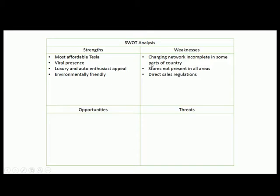The weaknesses added to the chart are: an incomplete charging network in certain parts of the country, and stores not being present in all areas. One reason for that is direct sale regulations in many states which prohibit a car manufacturer from selling directly to consumers without a dealership. You can see what I'm doing here — teasing out potential strengths and weaknesses from the data in front of me — and you can apply this same approach to any product or service.